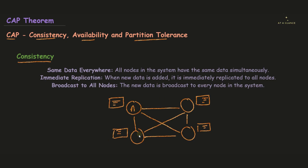Let's say some transaction takes place between nodes A and B — the ledgers of these two nodes will be updated, denoted with a plus sign. According to the rule of consistency, whatever transaction updates the ledgers should reflect immediately to all nodes' ledgers present inside the blockchain network. So the ledger of every other node has to be updated as well — that is what is meant by 'same data everywhere.' Every single node in the system will have the same data simultaneously.